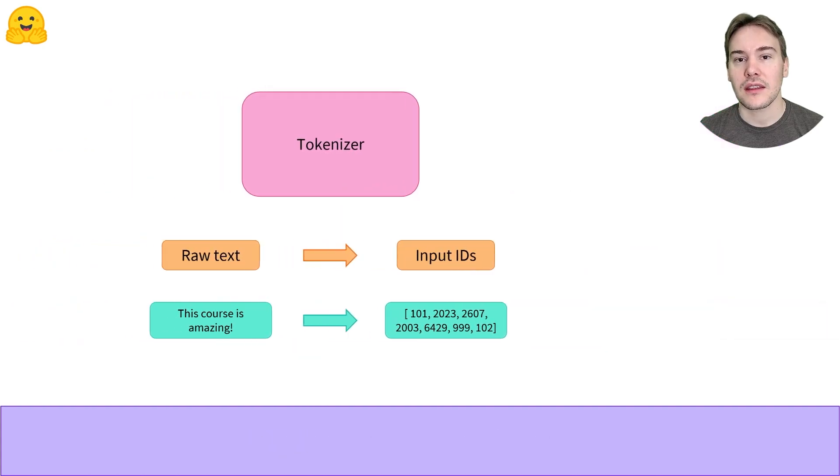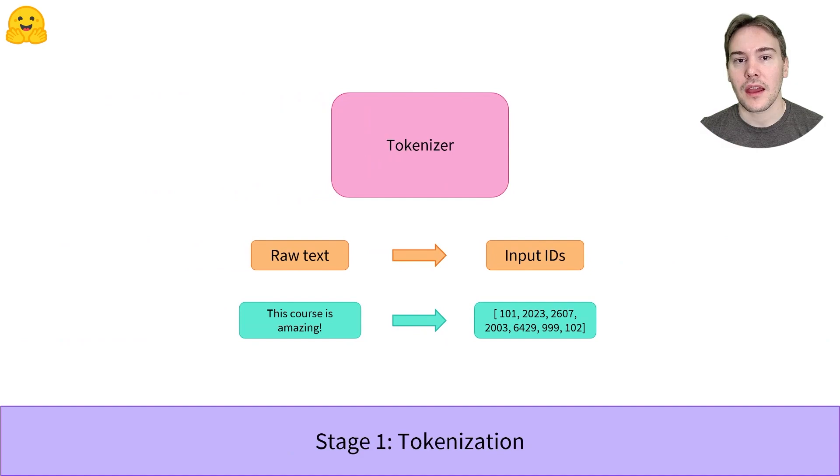Let's look in detail at those three steps and how to replicate them using the transformers library, beginning with the first stage, tokenization.